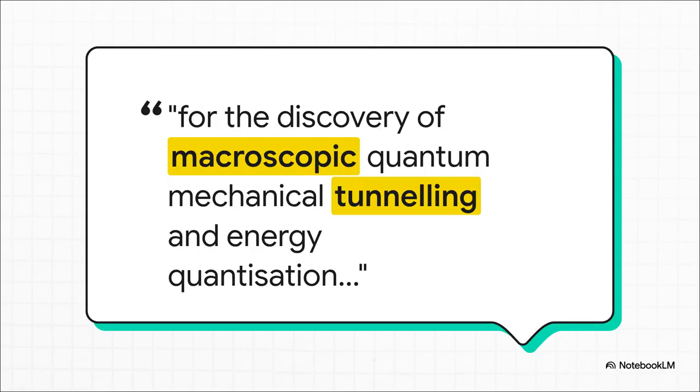Well, the people who figured it out were John Clarke, Michel Devoret, and John Martinis. The Royal Swedish Academy gave them the Nobel for, get this, macroscopic quantum mechanical tunneling and energy quantization in an electric circuit. Okay, that is a mouthful. But what does it actually mean?